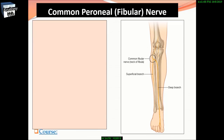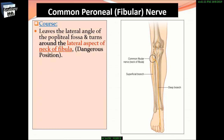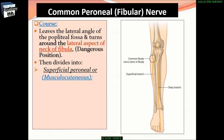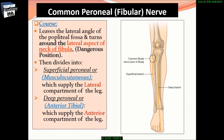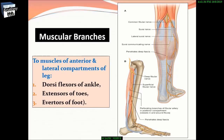The common peroneal (fibular) nerve leaves the lateral angle of the popliteal fossa and turns around the lateral aspect of the neck of the fibula — a dangerous position. It then divides into the superficial peroneal (musculocutaneous) nerve, which supplies the lateral compartment of the leg, and the deep peroneal (anterior tibial) nerve, which supplies the anterior compartment of the leg. Muscular branches supply dorsiflexors of the ankle and extensors of the toes.